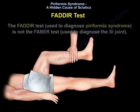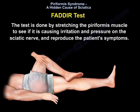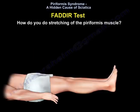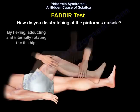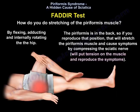The FAIR test is not the FABER test. The FABER test is used to diagnose the sacroiliac joint. The FAIR test is used to diagnose piriformis syndrome. The test is done by stretching the piriformis muscle to see if it is causing irritation and pressure on the sciatic nerve and reproducing the patient's symptoms. You stretch the piriformis muscle by flexing, adducting, and internally rotating the hip. If you reproduce that position, it will stretch the piriformis muscle and cause symptoms by compressing the sciatic nerve, putting tension on the muscle and reproducing the patient's symptoms.